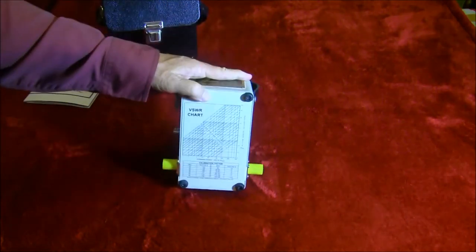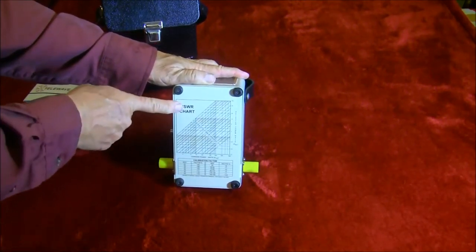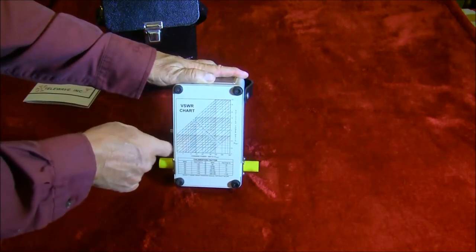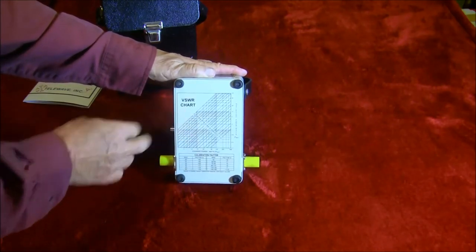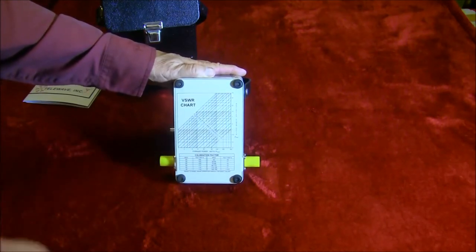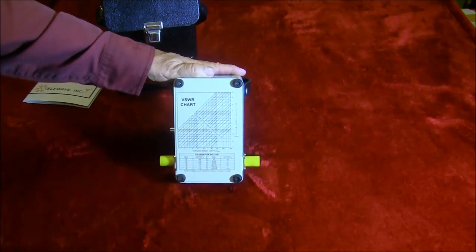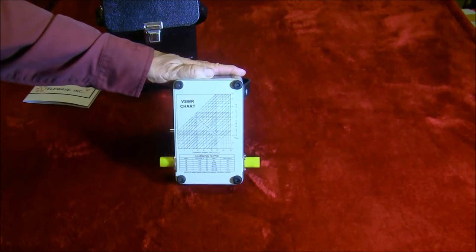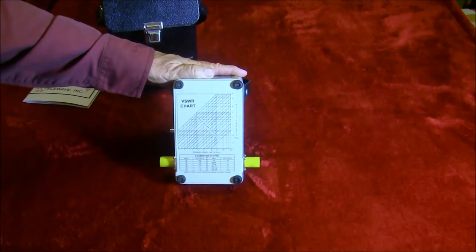On the back, we have charts here. We have a VSWR chart. The VSWR chart is forward power versus reverse power, and you can find the standing wave using that chart. This is also their calibration factor. At various frequencies, this has one directional coupler in it. It's been calibrated, so we know what the factor is to get the exact power level, and we'll go into that in detail.